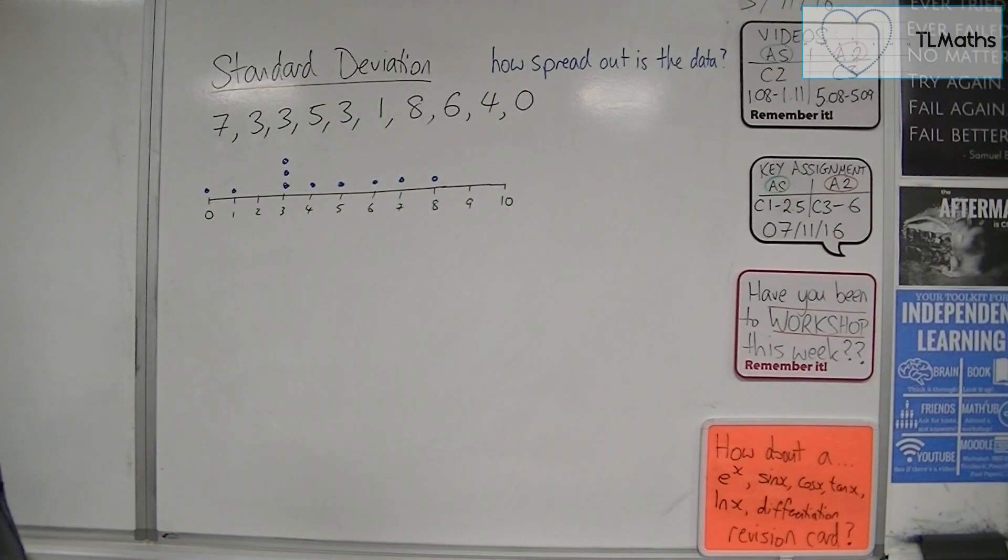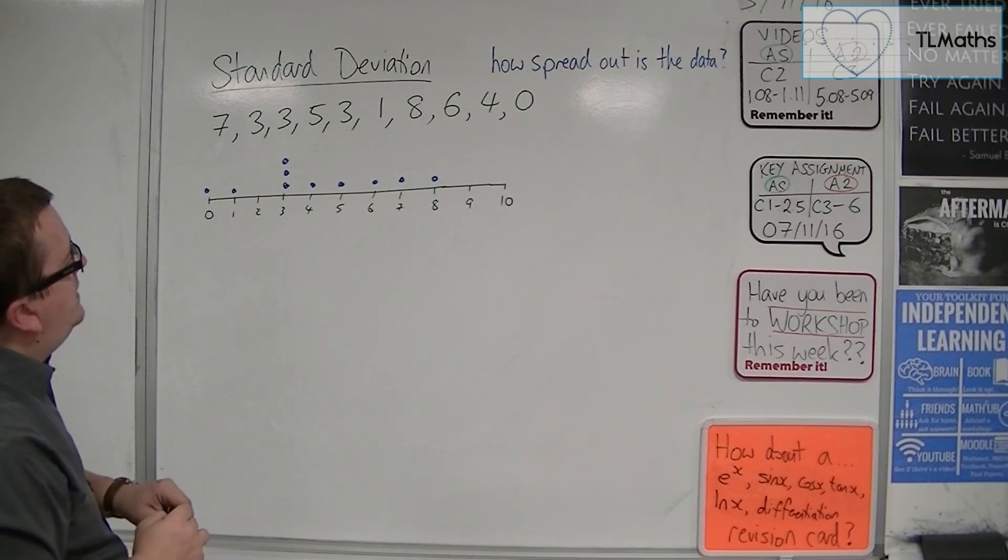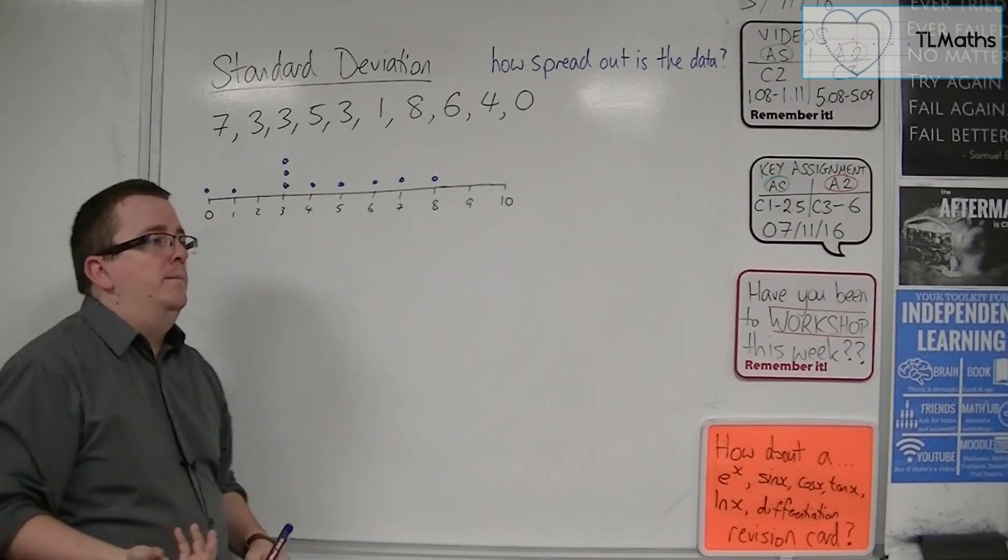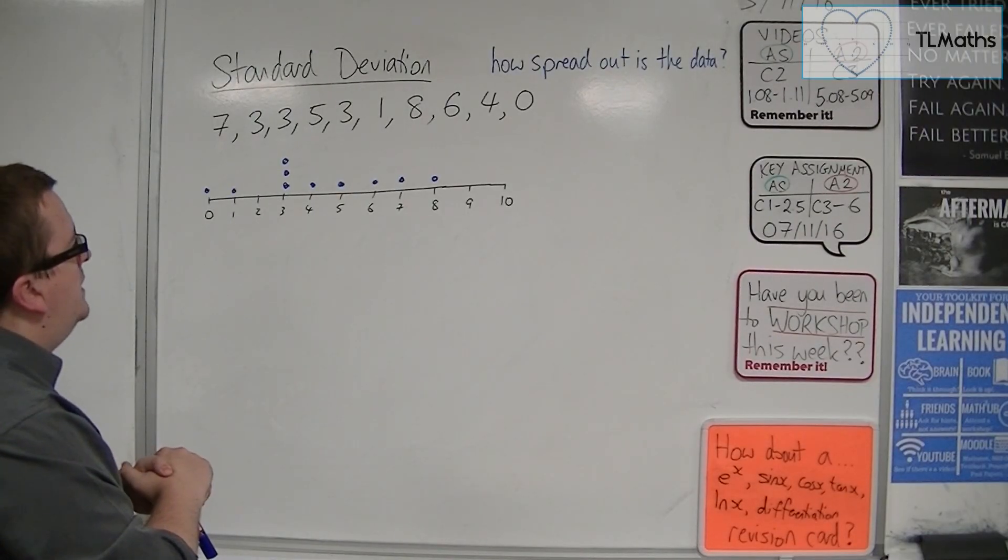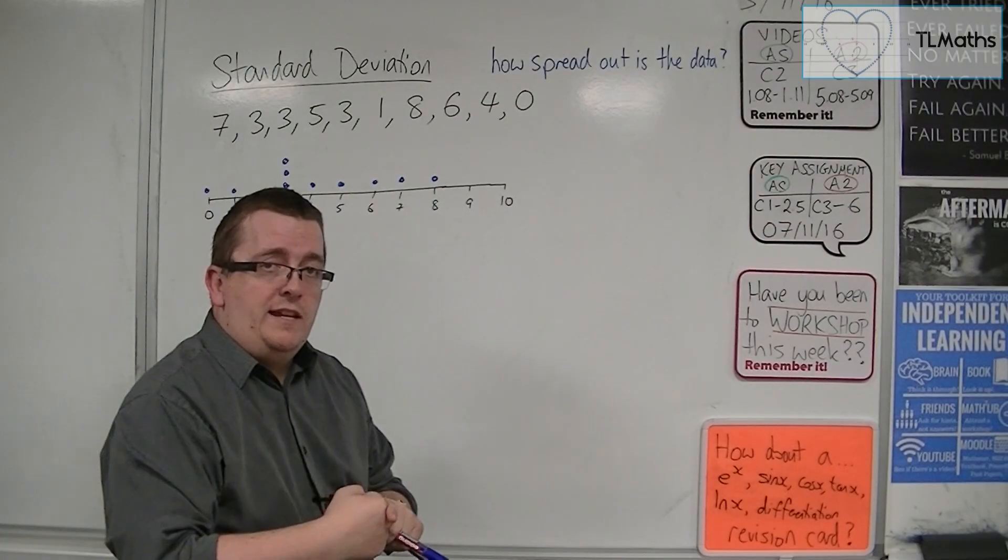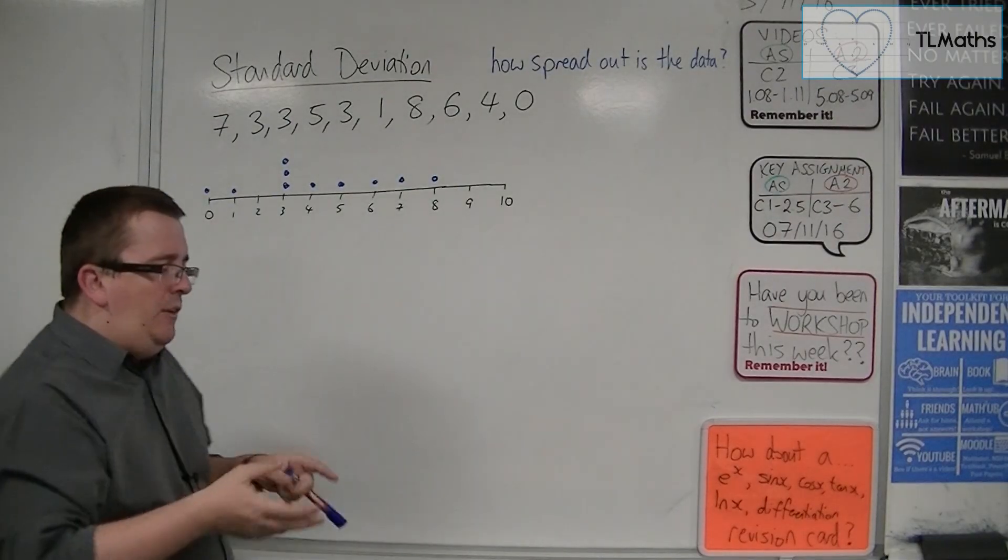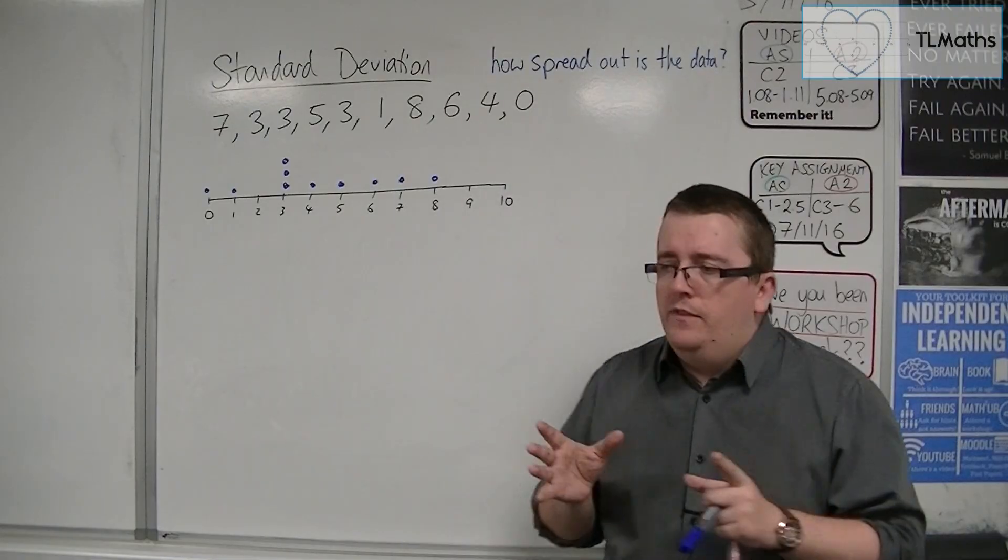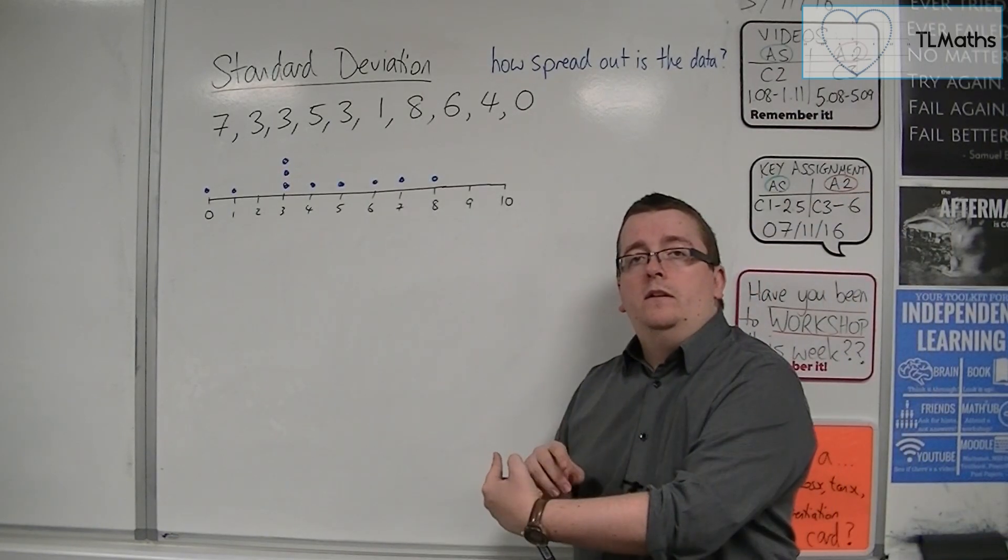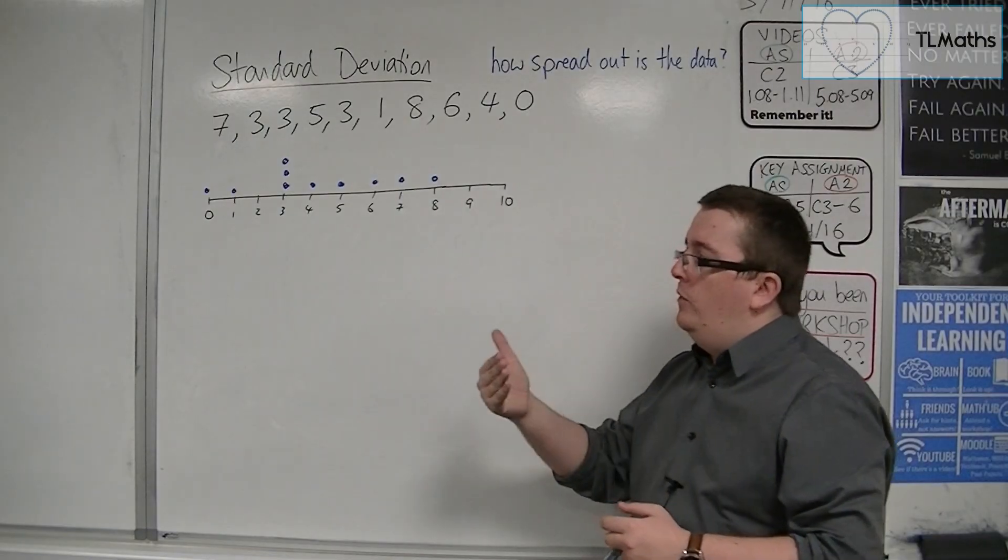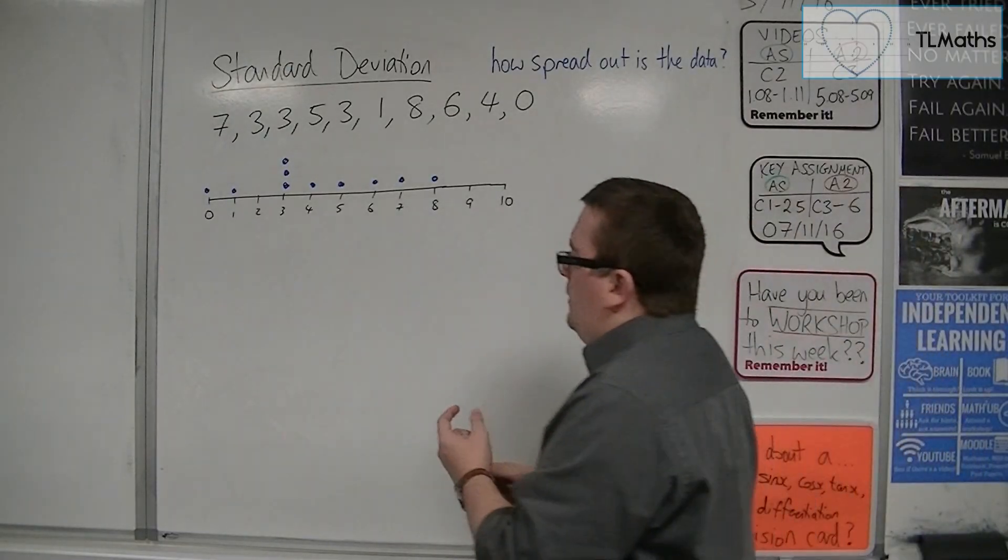Okay, so how spread out is this data? Well, it looks reasonably spread out, but really what I want is to find a numerical way of describing it. Some way where I can say, this value tells me how spread out the data is. And the larger that number, the more spread out the data is. The smaller, the more compact. So, it makes sense then that I would be looking for something that will allow me to compare each of these points with the mean. Because if I then found the mean, I'd be able to say, well each one of these is on average this far apart from the mean.